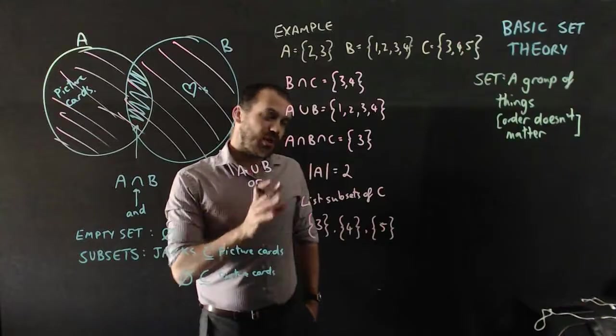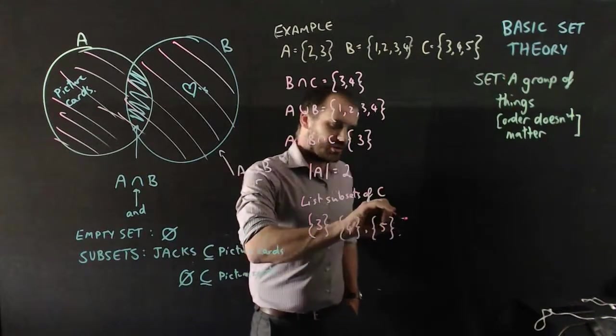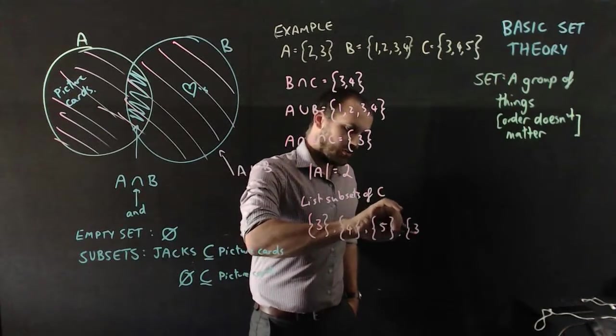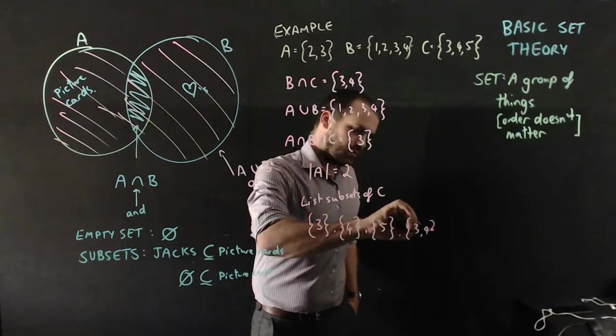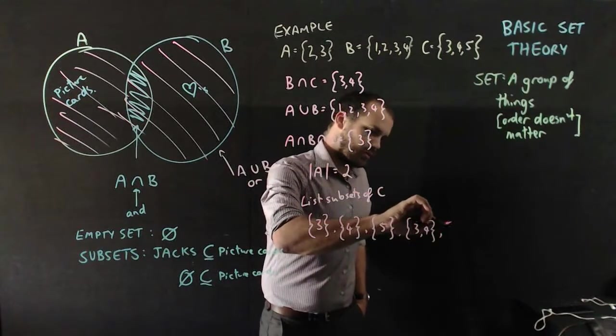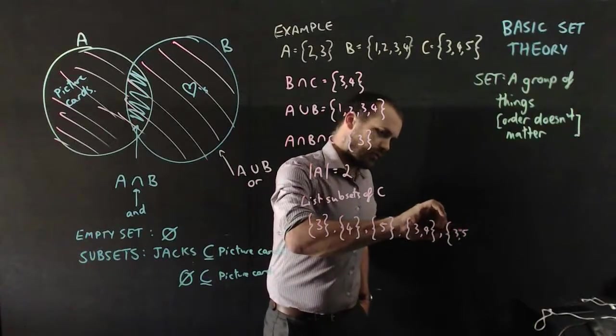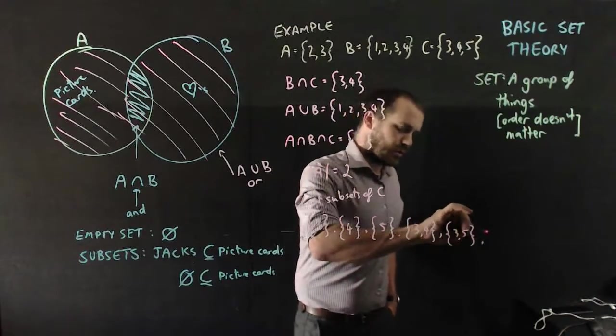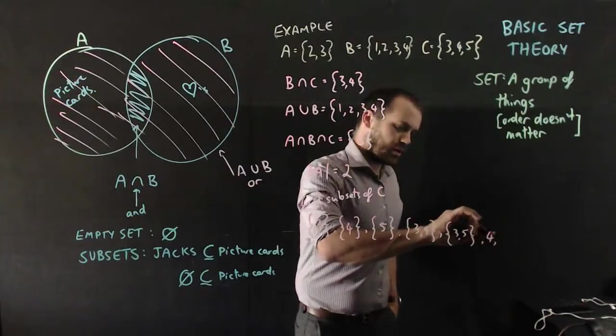And then we have to go through all of the two element sets. So, {3, 4}, {3, 5}, {4, 5}.